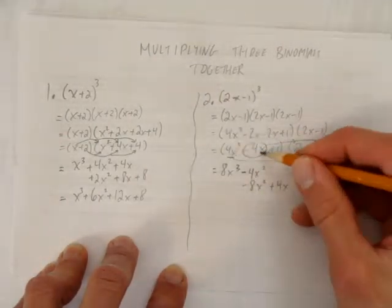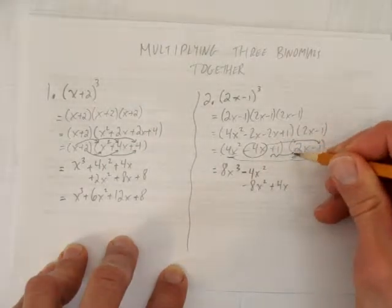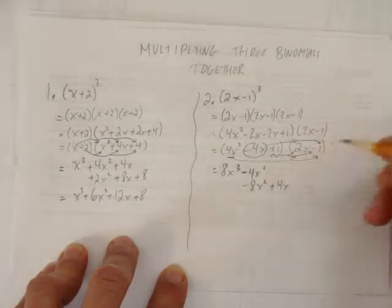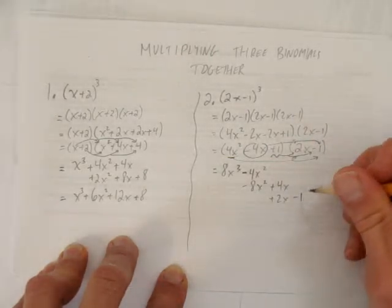Done the first one, done the second one. Last term. This plus 1, I'm going to multiply it by each thing. So, plus 1 times 2x is just plus 2x. And plus 1 times minus 1 is minus 1.